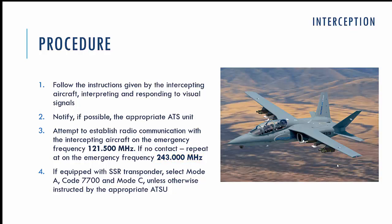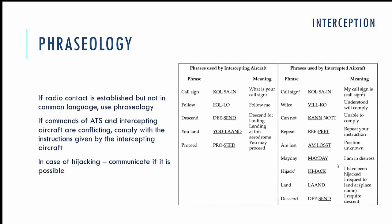If your aircraft is equipped with an SSR — secondary surveillance radar transponder — you need to set squawk code 7700, which is the emergency code, unless you are instructed to set another squawk code by your ATS unit.